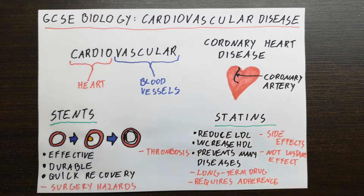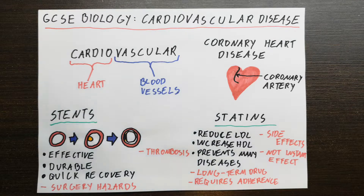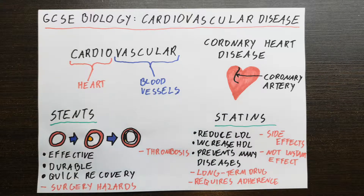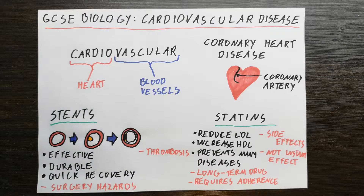Previously we've been looking at various components of cardiovascular systems such as blood vessels and the heart itself and how it all connects up. However, today we'll be looking at what happens when the cardiovascular system goes wrong, i.e. cardiovascular disease. So without further ado, let's get started.